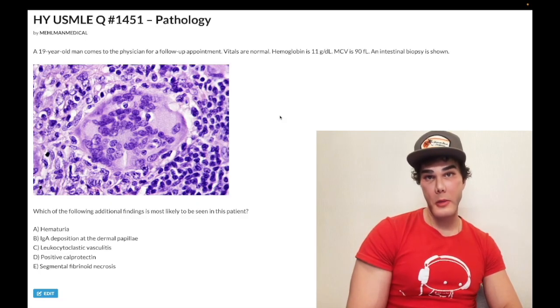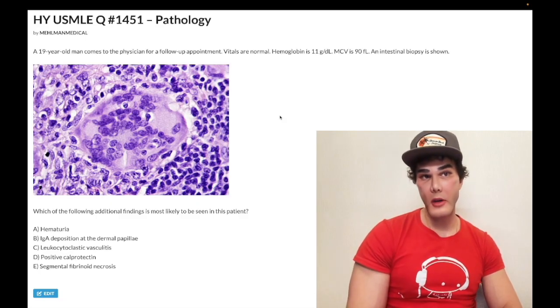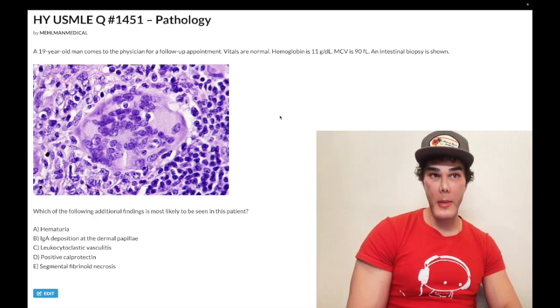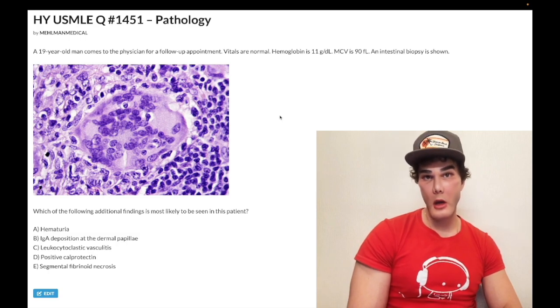which is classic for anemia of chronic disease. Obviously, in about 50% of USMLE questions, they can give you a low-end MCV for anemia of chronic disease. So don't memorize that it must be normocytic. But if you do see a normocytic anemia, then it's anemia of chronic disease on USMLE.